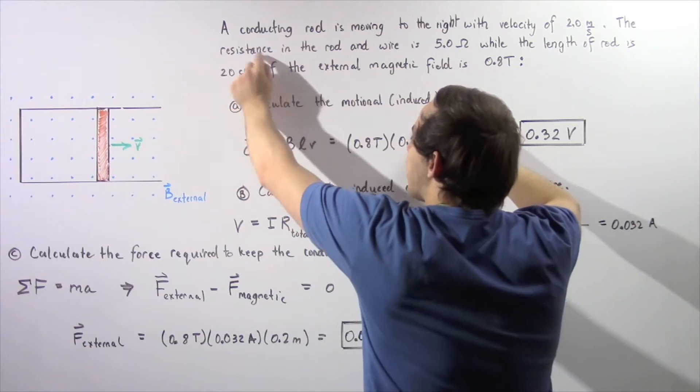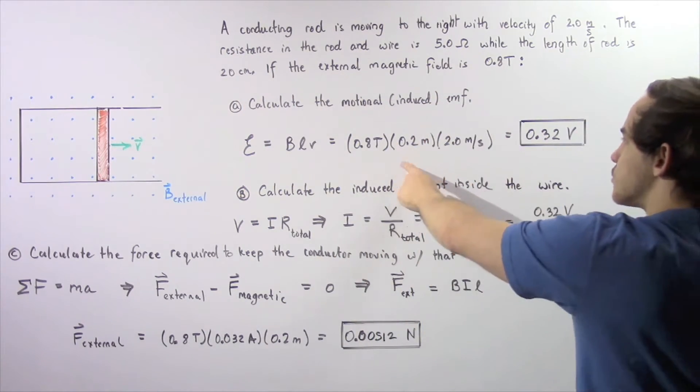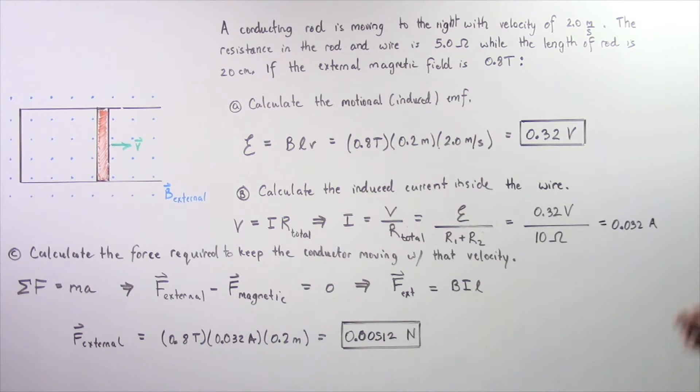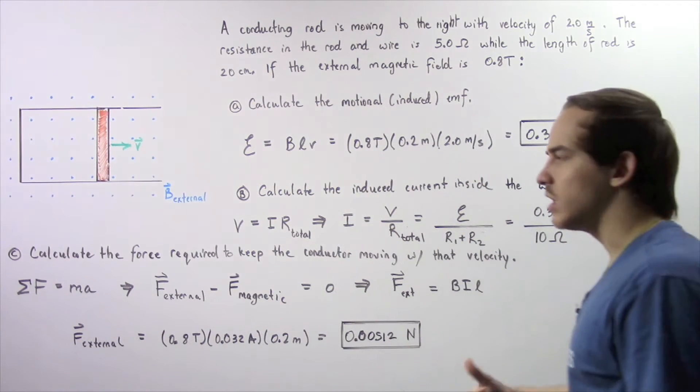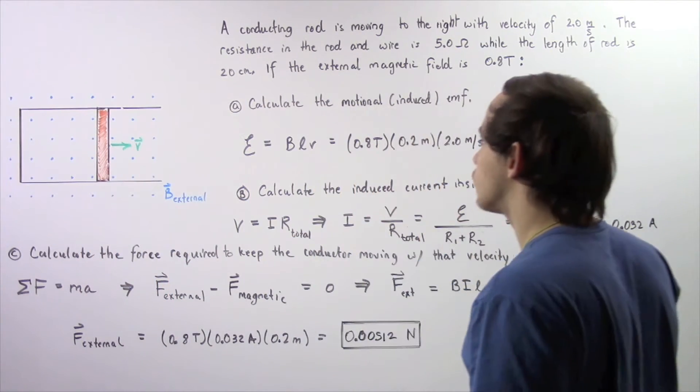...where we took this quantity divided by 100 and converted centimeters to meters. So we multiply and we get 0.32 volts is our motional induced EMF as a result of our moving conducting rod.